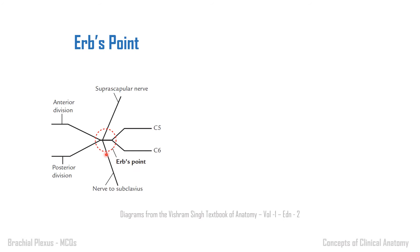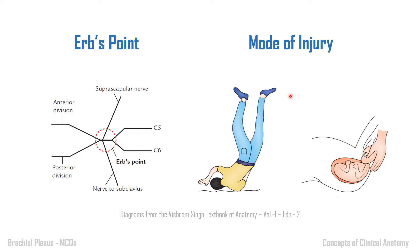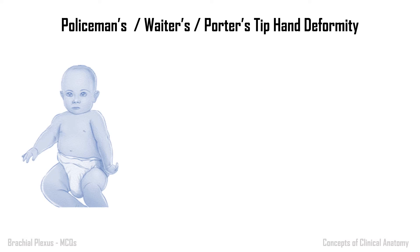If there is any injury at this point it leads to Erb's paralysis. The mode of injury is when the person falls on the shoulder, or there is undue separation between the head and the shoulder. During birth injury, in cases of shoulder dystocia or difficult delivery, when the head is abducted too much it also leads to Erb's paralysis. A typical deformity appears known as policeman's, waiter's, or porter's tip hand.